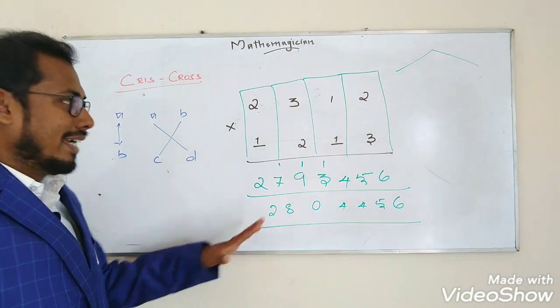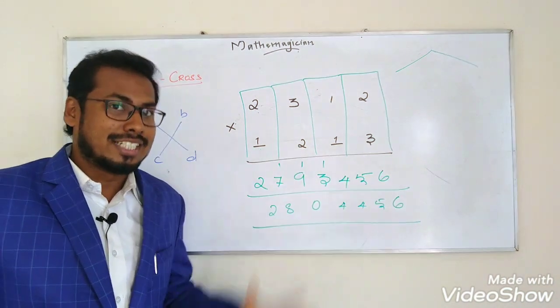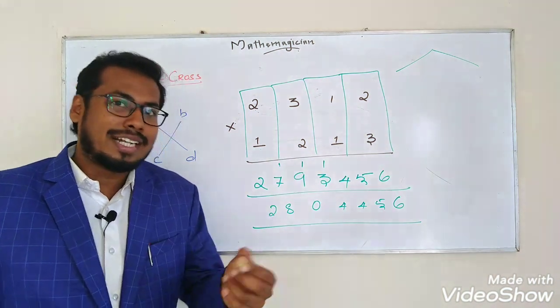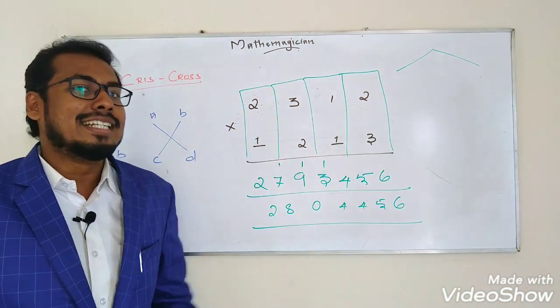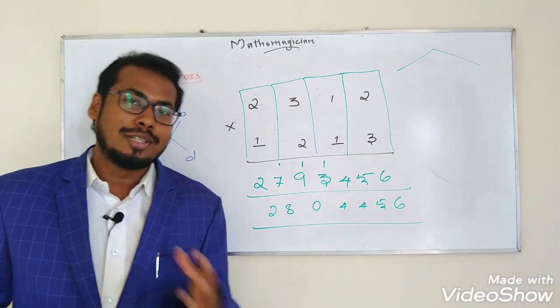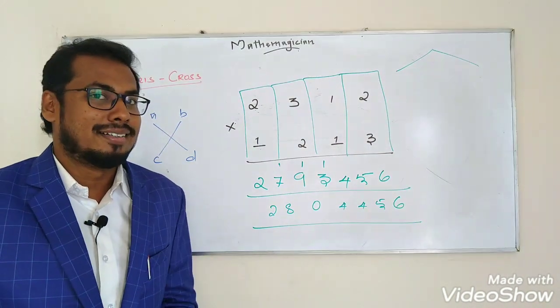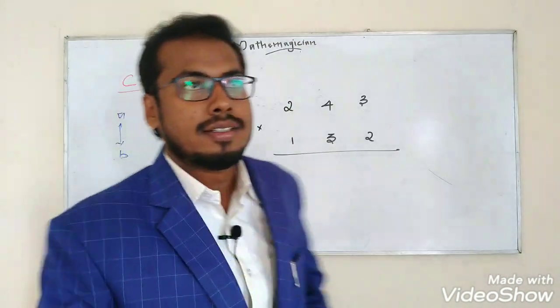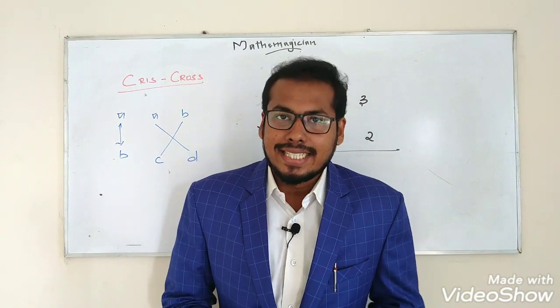Check it. This is a 4-digit by 4-digit multiplication example. This is also applicable for 3-digit by 2-digit and 2-digit by 2-digit numbers. Next, let us look at the 3-digit by 3-digit number example.